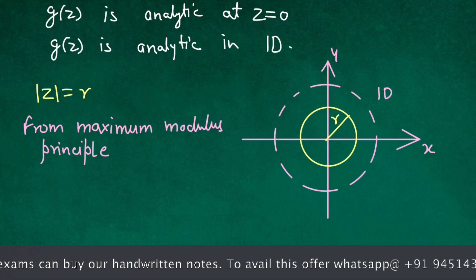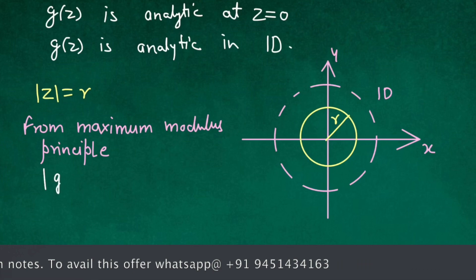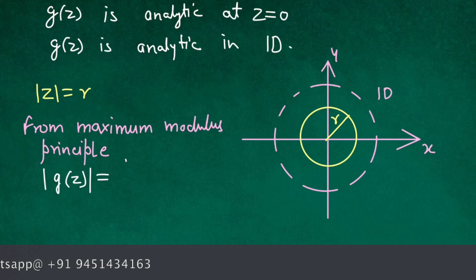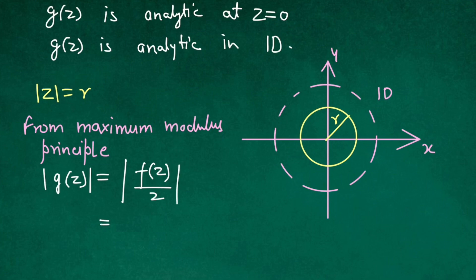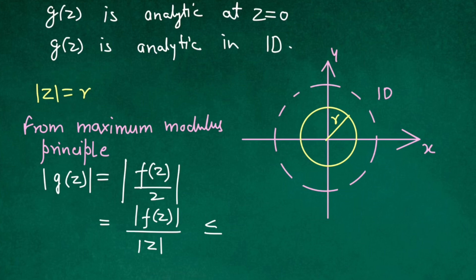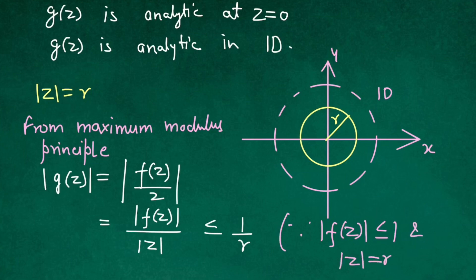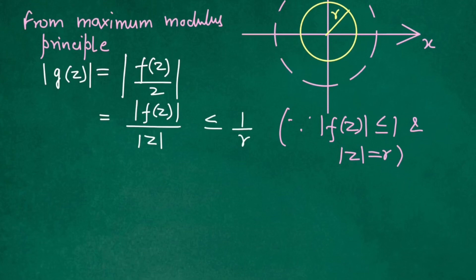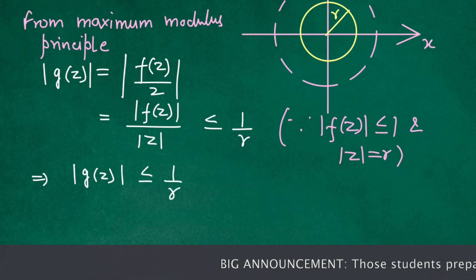Let me write the maximum value for g(z). We have |g(z)| = |f(z)/z| = |f(z)|/|z|. We can say this is less than or equal to 1/r. Why? Because it is given that |f(z)| ≤ 1, and on the circle |z| = r. Therefore |g(z)| ≤ 1/r.